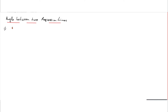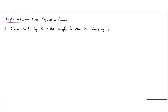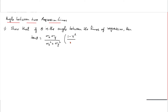We can take down the question. Show that if theta is the angle between the lines of regression, then tan theta equals sigma x sigma y divided by sigma x squared plus sigma y squared, times of 1 minus r squared divided by r.